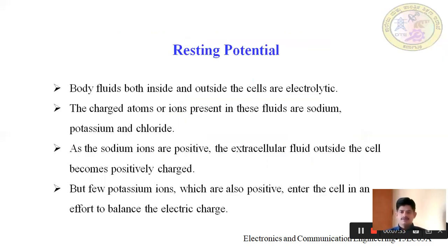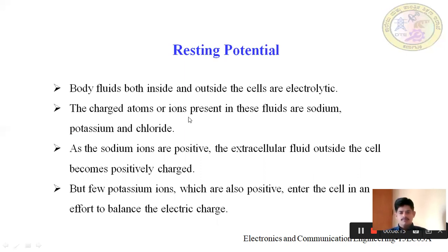Now we have understood the basics of different types of potential generated in the body. Any cell will have two types of potential: one is resting potential and one more is action potential. We will understand what is meant by resting potential and action potential, along with some basics of cells like the fluids around them. The body fluid both inside and outside the cell are electrolytic — each cell is surrounded by fluid, both inside and outside, containing electrolytic material. The charged atoms or ions present in these fluids are sodium, potassium, and chloride — these three are very important for understanding resting and action potential.